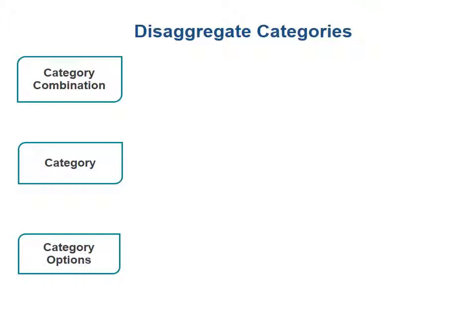So disaggregate categories. Categories in this way are going to be pulling apart a data element so that we can disaggregate the information. For example, we've got gender and age. In our example here, that is the category combination. Gender is a category itself and age is a category itself, but together we have the category combination gender and age.